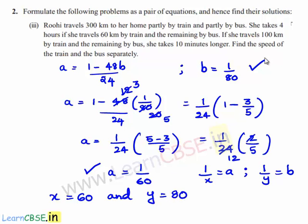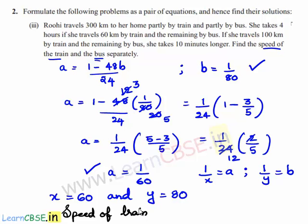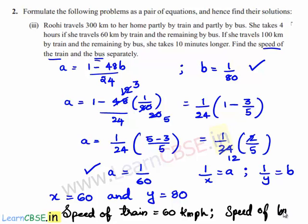Therefore, the speed of the train is 60 km/hr and the speed of the bus is 80 km/hr.